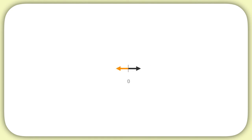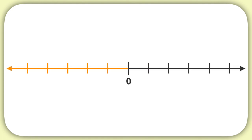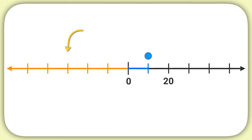Now here's your last problem for this video. Here's a number line, and this dash will represent 20. What number does this dash represent? Well, starting at 0, I move 20 when I've moved two dashes. That means moving one dash is a distance of 10.